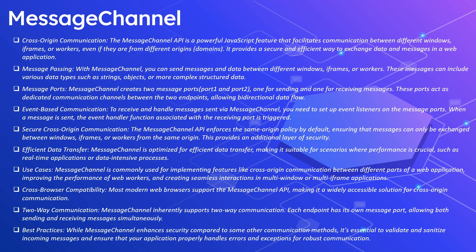These ports act as dedicated communication channels between the two endpoints, allowing bidirectional data flow. Event listeners on the message ports need to be set up to receive messages. When a message is sent, the event handler associated with the receiving port is triggered. The MessageChannel API enforces security measures for secure cross-origin communication and is optimized for efficient data transfers, making it suitable for scenarios where performance is critical.